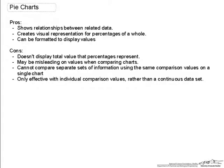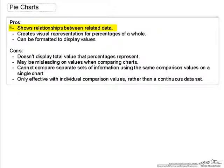To recap the pros and cons of each: for pie charts, the pros are that it shows relationships between related data — for example, the relationships between tuition and fees for in-state and out-of-state students. It also creates a visual representation for percentages of a whole; for example, only 40% of what an in-state student pays is their dorm payment, while 67% of what the out-of-state student pays is just tuition. Another pro is that it can be formatted to display values or percentages — for example, displaying that 50% of voters chose one option over another.